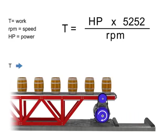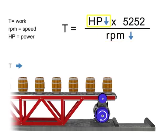Similarly, the opposite is true. If we wish torque to remain constant and decrease speed, then the horsepower of the motor also decreases.